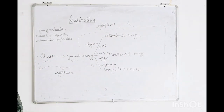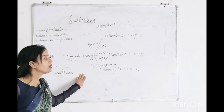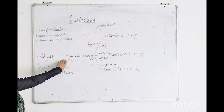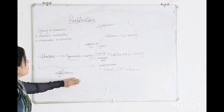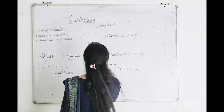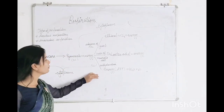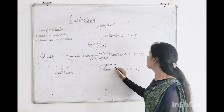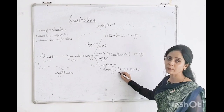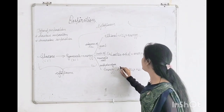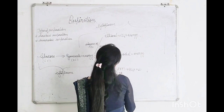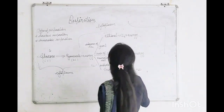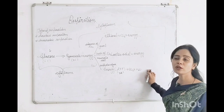In aerobic respiration — proper respiration — it will start first in the cytoplasm of the cell, breaking down glucose into pyruvate, and then will continue into the mitochondria. Mitochondria is the powerhouse of the cell. The complete breakdown occurs and energy is released in the form of ATP — 38 molecules of ATP are synthesized by one molecule of glucose. Carbon dioxide and water are also released.